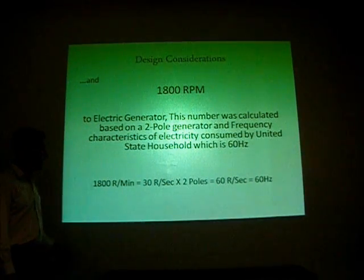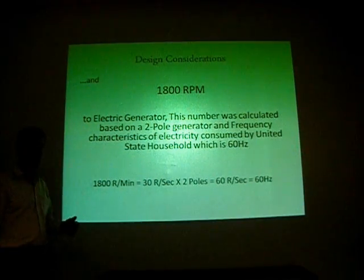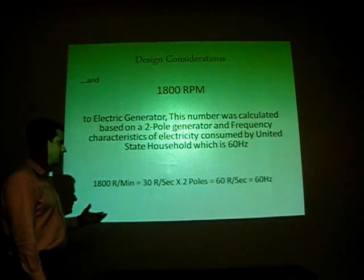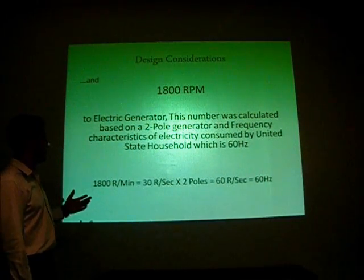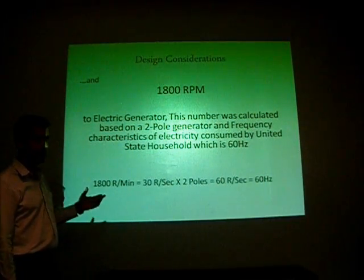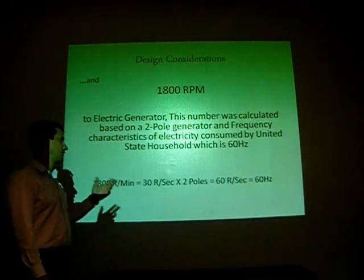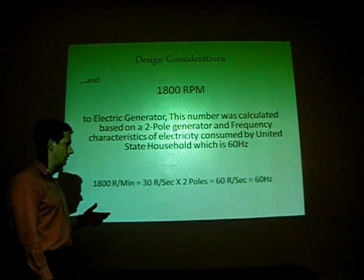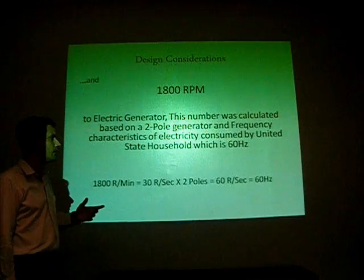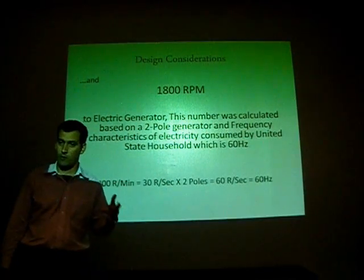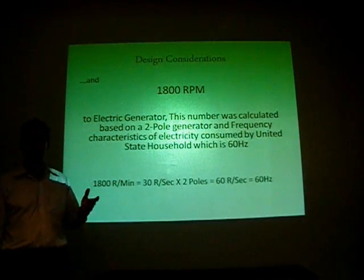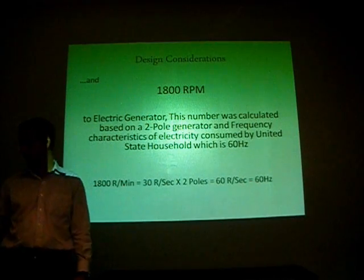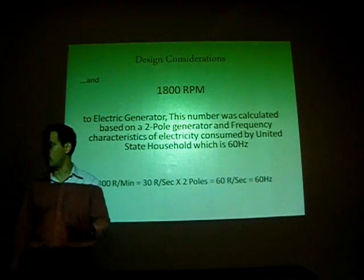As we are seeing on the bottom here, 1800 revolutions per minute divided by 60 seconds per minute gives us 30 revolutions per second. Times two poles will give us 60 revolutions per second — that would be 60 cycles per second, called hertz. That is how we obtain this number.